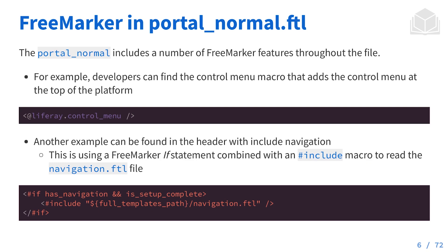Some of these are already built in, and we can of course include our own custom files as well. For example, if I want to distinguish the footer FreeMarker code from the portal_normal to keep it clean, I can go in and create a footer.ftl, and then simply include it in the portal_normal file. We'll actually take a look at doing that when we create our theme together.